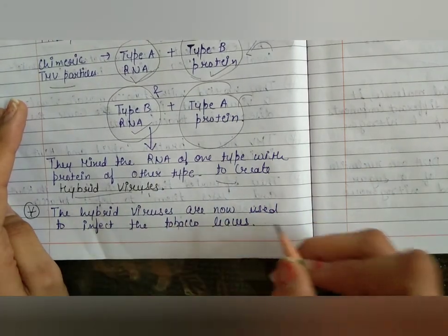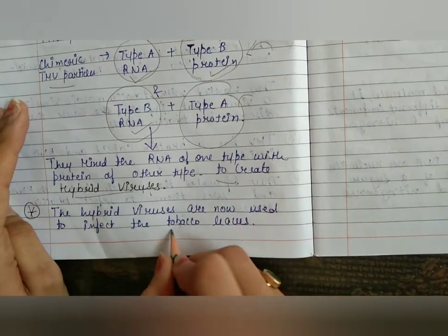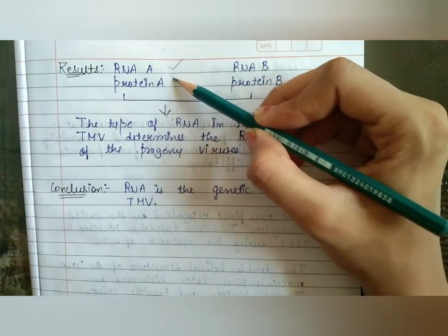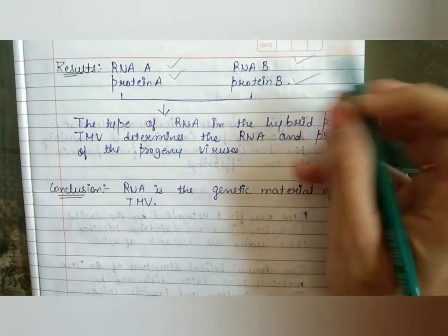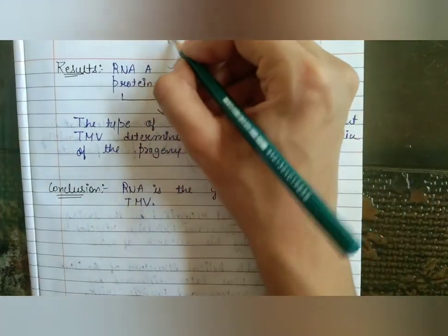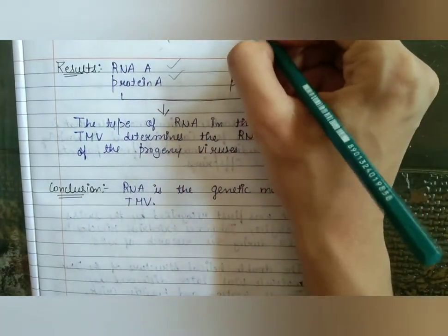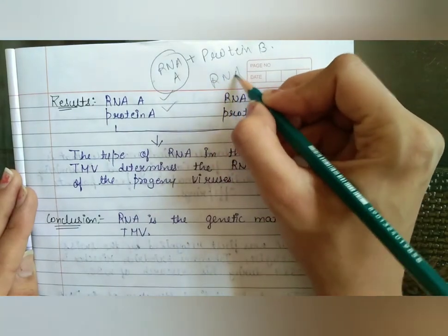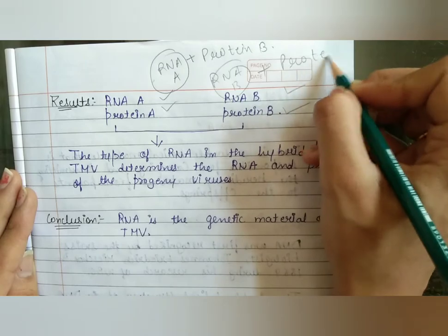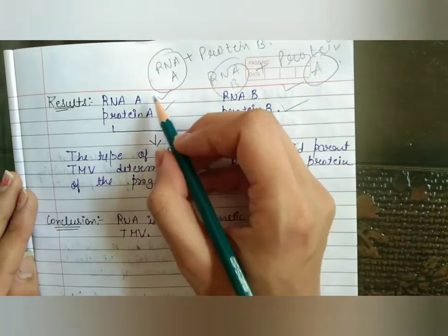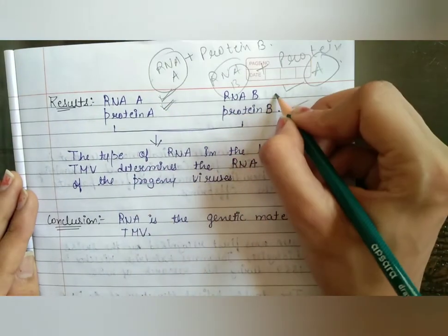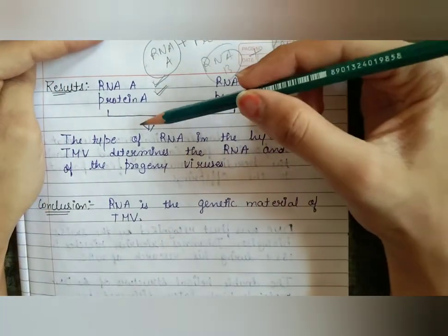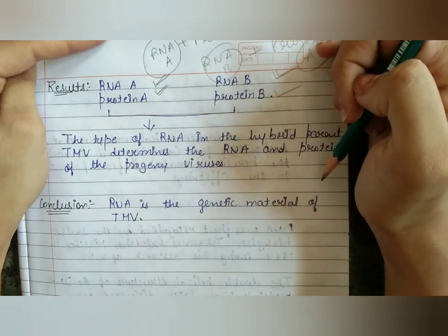The results showed that when the hybrid virus had RNA-A with protein-B, or RNA-B with protein-A, the type of RNA present in the hybrid parent TMV determined the RNA and protein of the progeny viruses. So if RNA was type A, the progeny produced type A protein; if RNA was type B, the progeny produced type B protein.